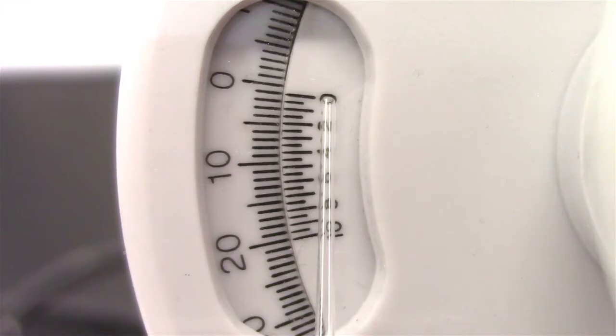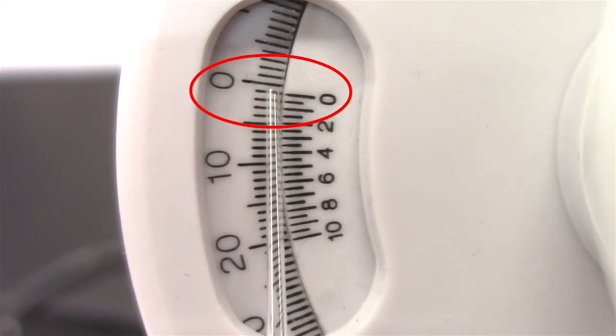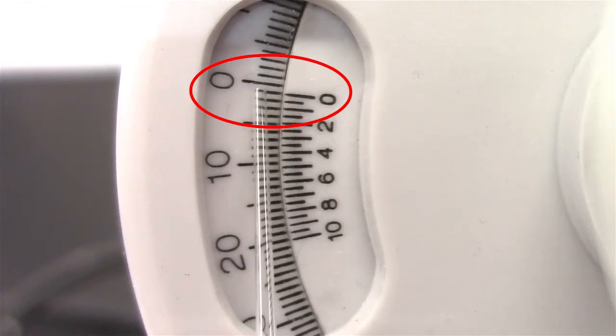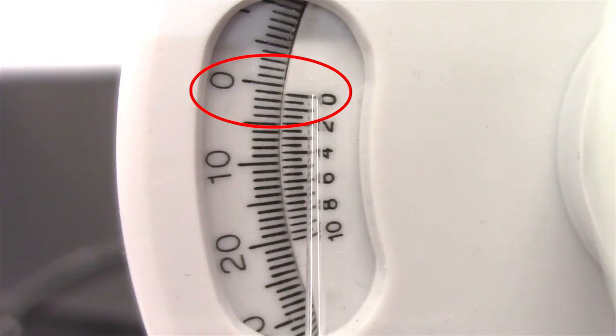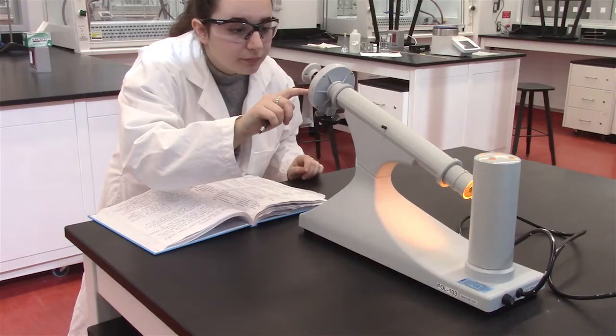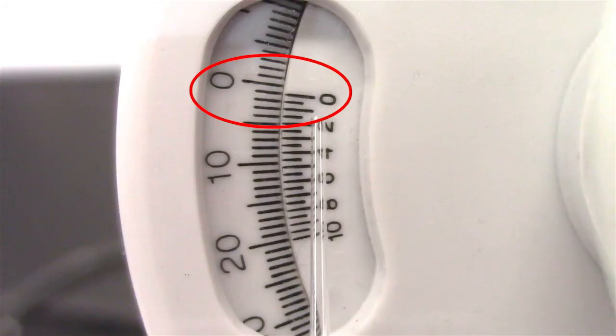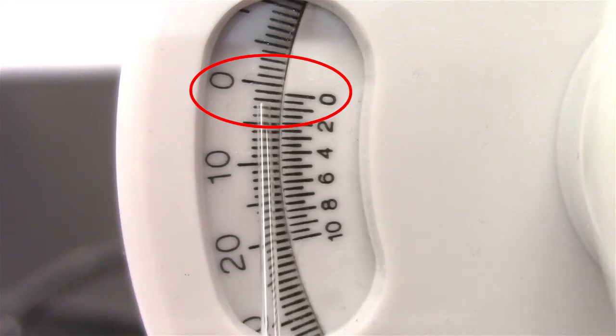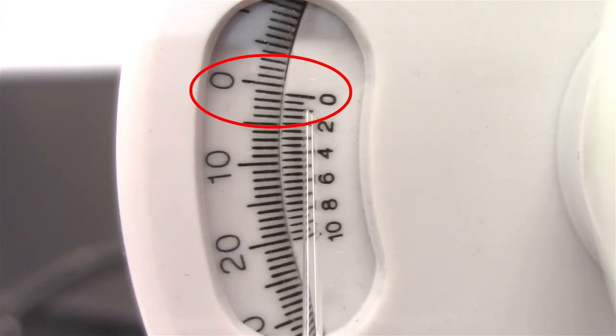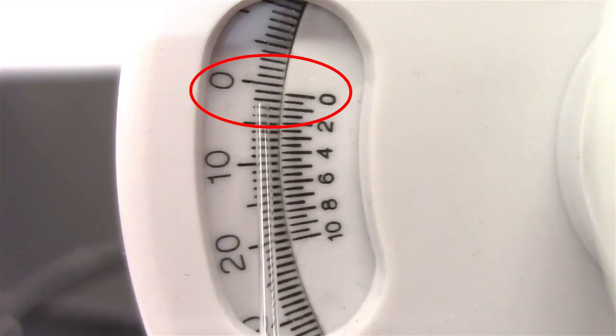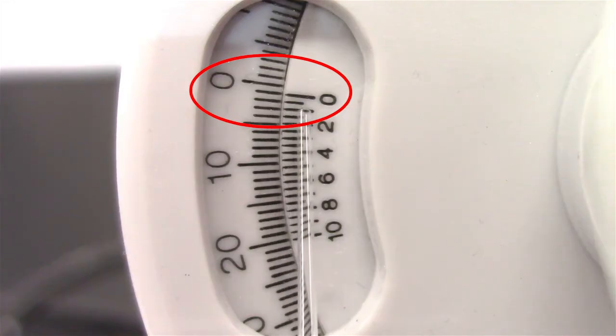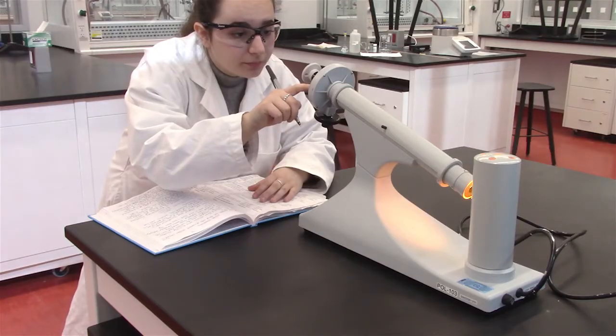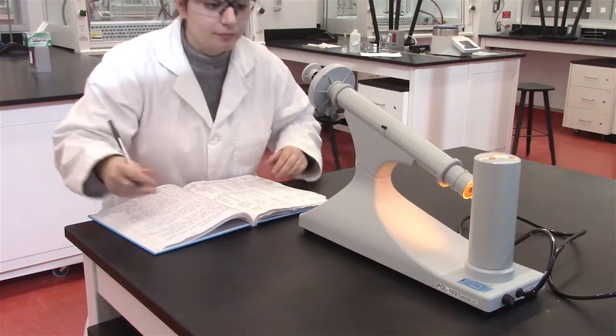To make the reading, note where the zero on the inner scale meets up with the numbers on the outer scale. In this example, the whole number is 1. To note the decimal, see where a line in the inner scale matches up with the line on the outer scale. In this example, the decimal number is 1. Therefore, for this sample, the reading is 1.1.